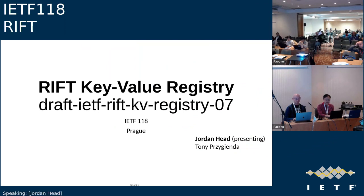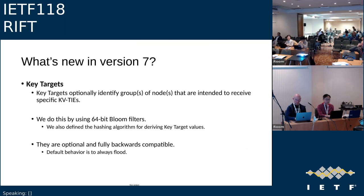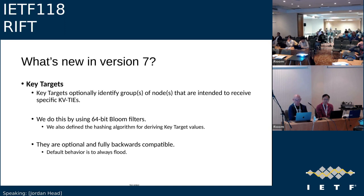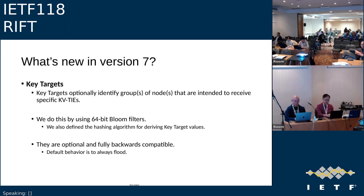KV Registry gets some interesting work here. As Jeff mentioned, there was discussion in San Francisco about how to distribute targeted information to nodes or sets of nodes with KV ties. We've been kind of at the mercy of southbound flooding, and if you get too many leaves it becomes too problematic. So I came up with the concept of key targets, where we can optionally identify groups of nodes intended to receive a specific KV tie. We do this using a 64-bit bloom filter, and we've also defined the hashing algorithm for deriving the key target values in the draft. It's completely optional, fully backwards compatible — default is to flood KVs as it is effectively today.